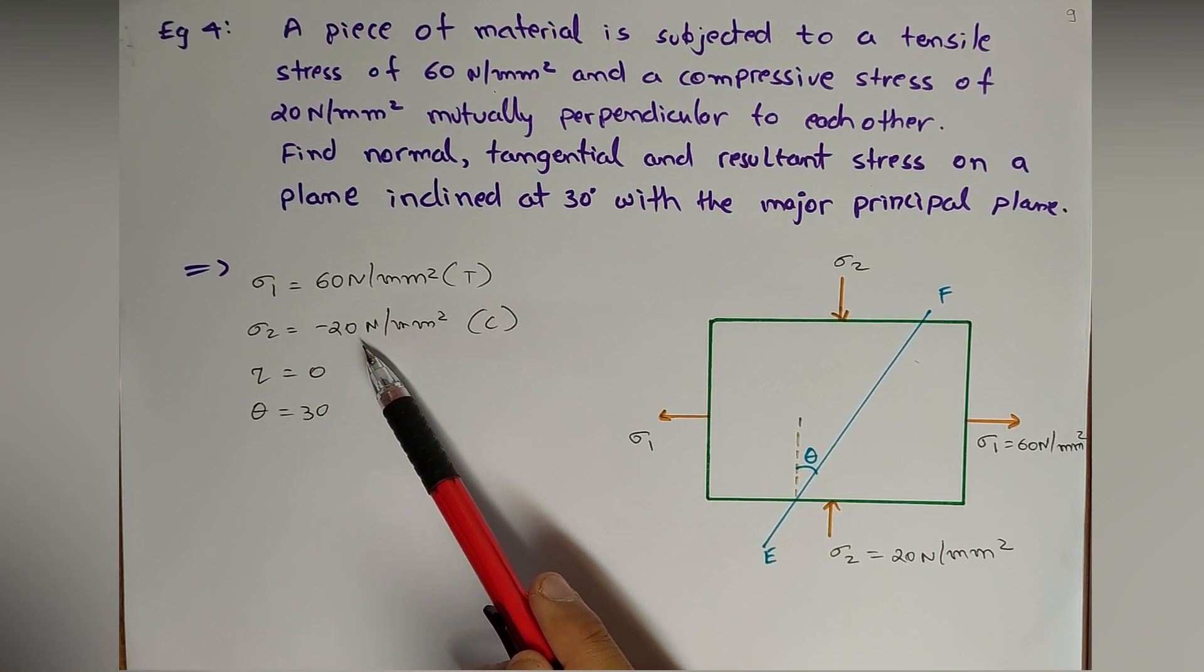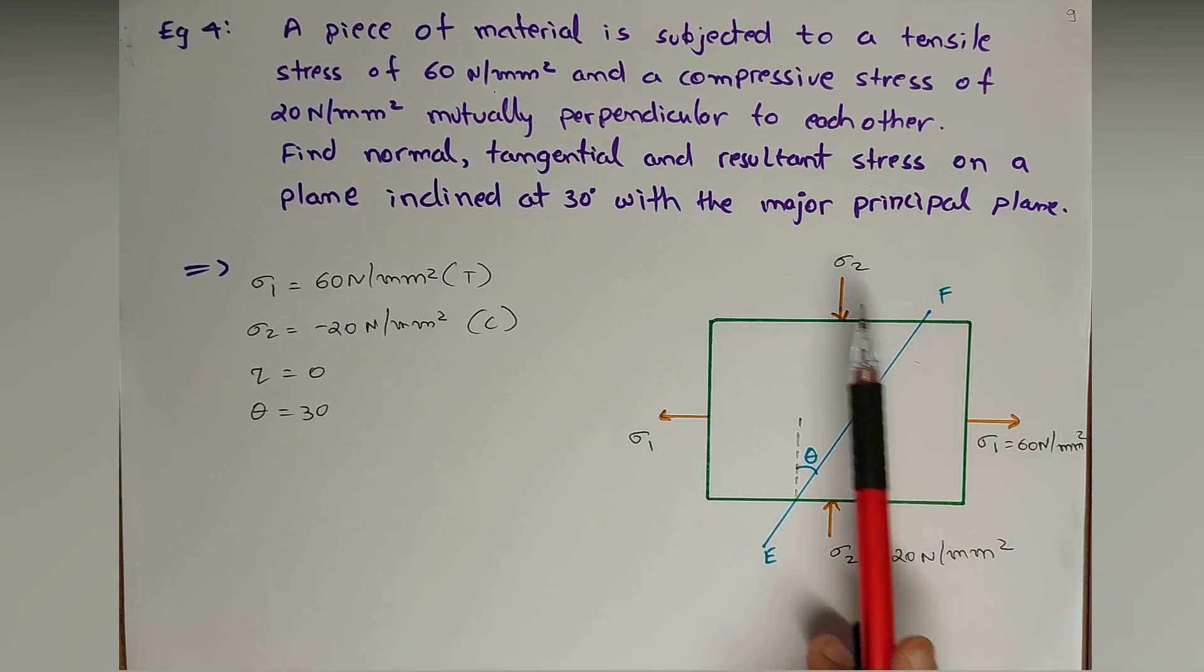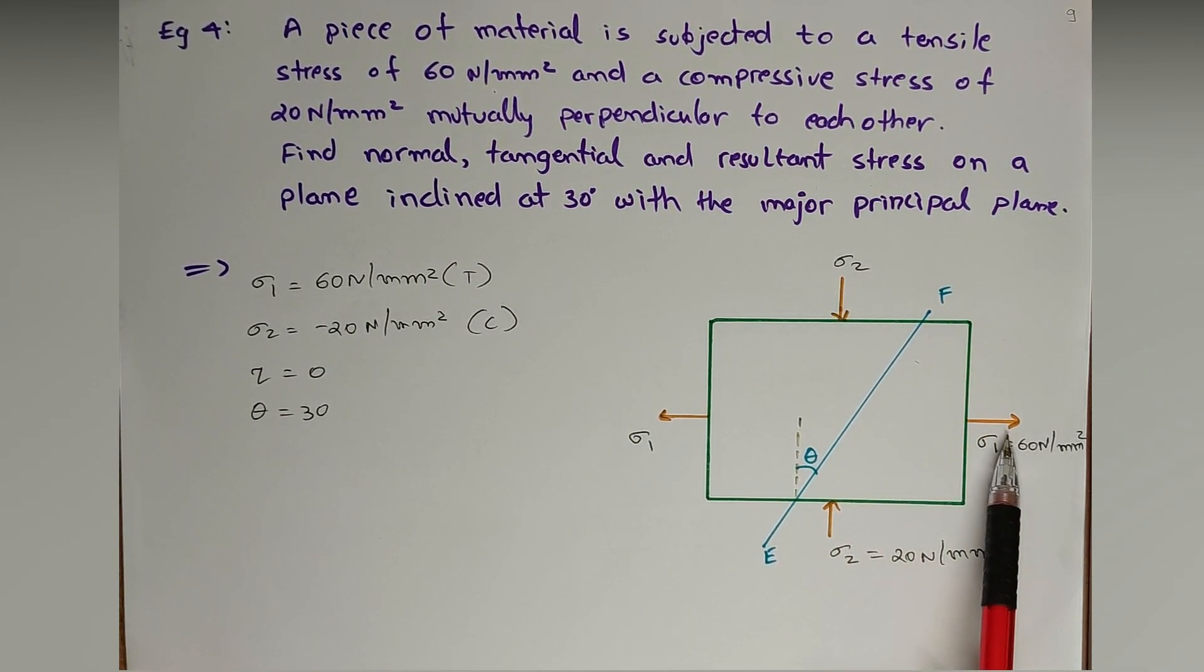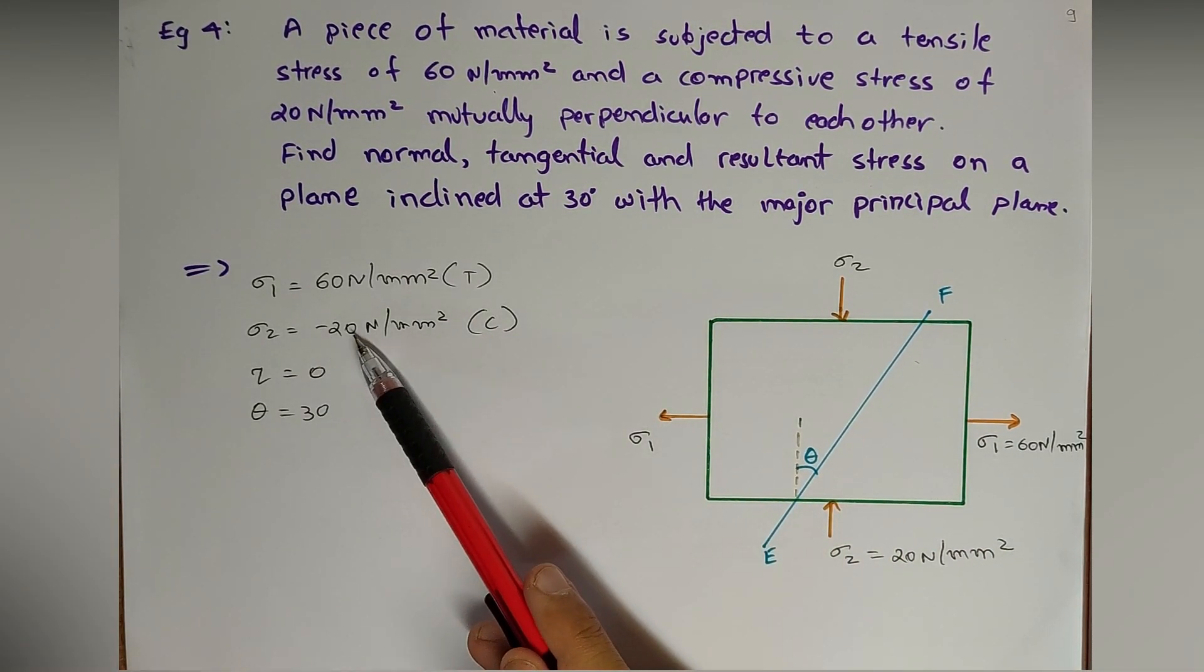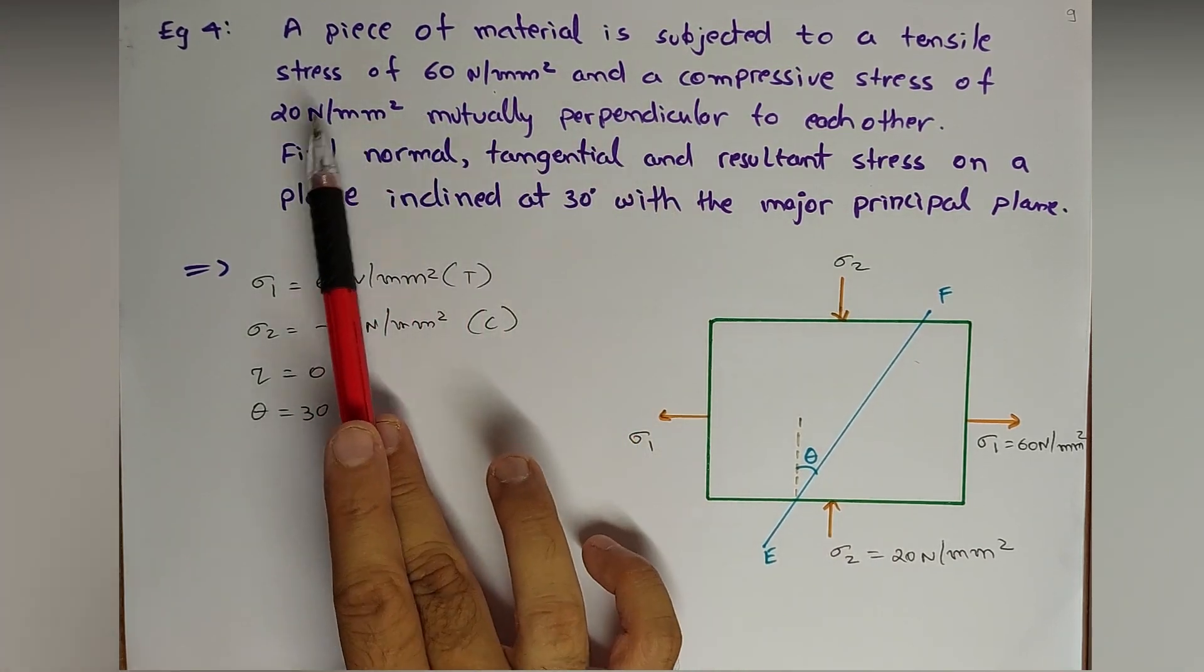Sigma 2 is minus 20 Newton per mm square. This negative sign I have taken because the direction or the nature of the stress on the other plane, sigma 2, is compressive. It is opposite to that of sigma 1, so it is negative, minus 20 Newton per mm square.